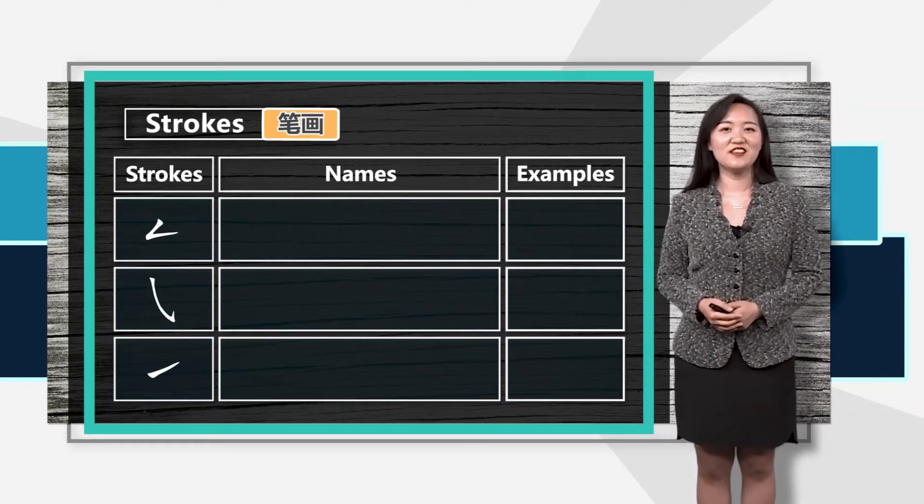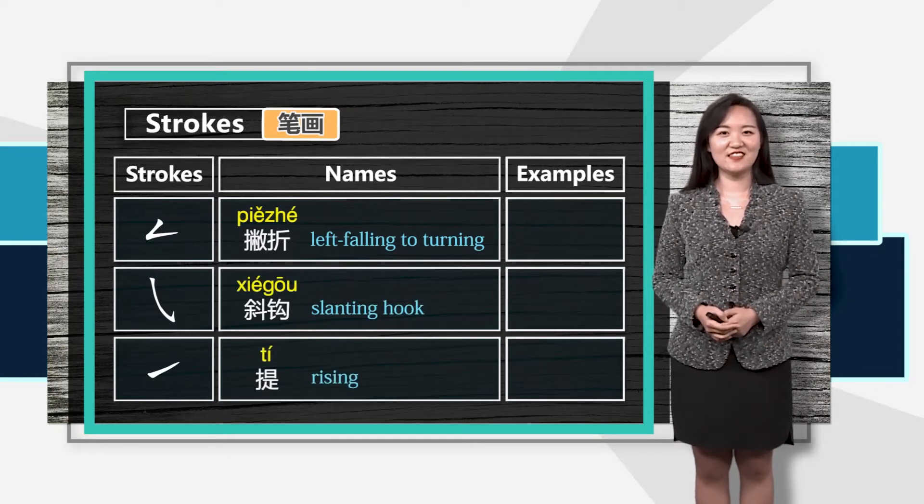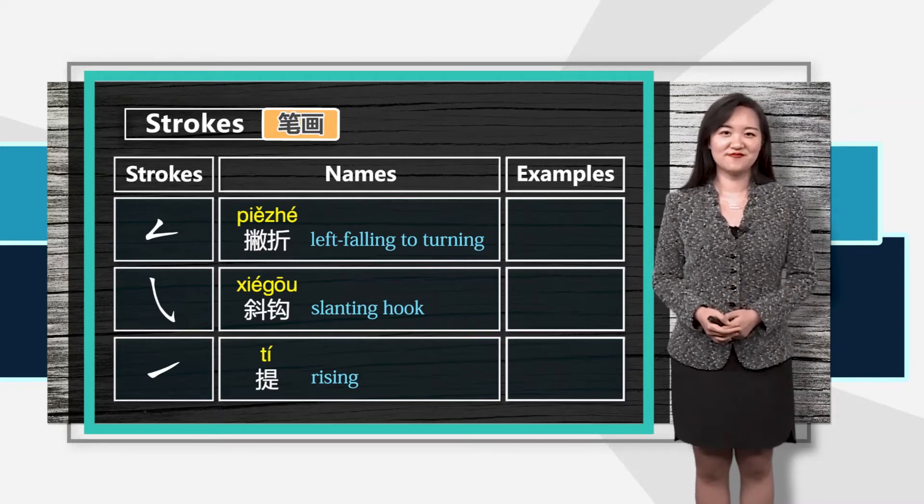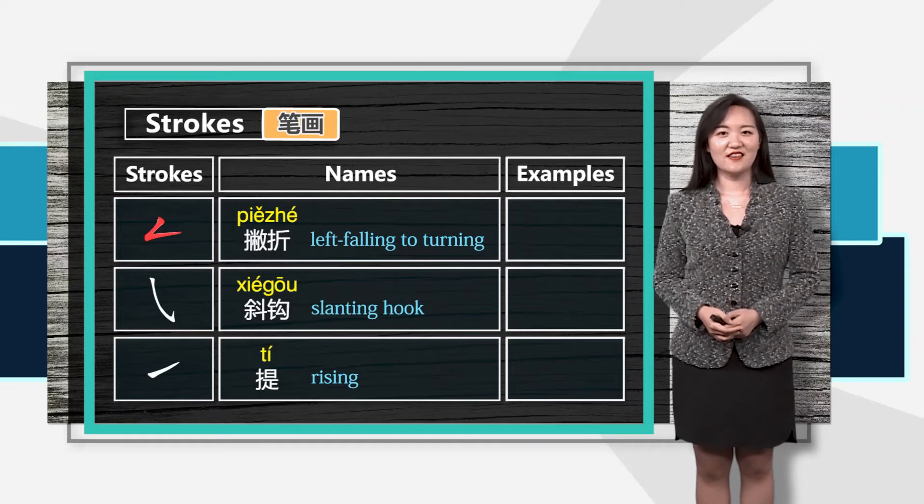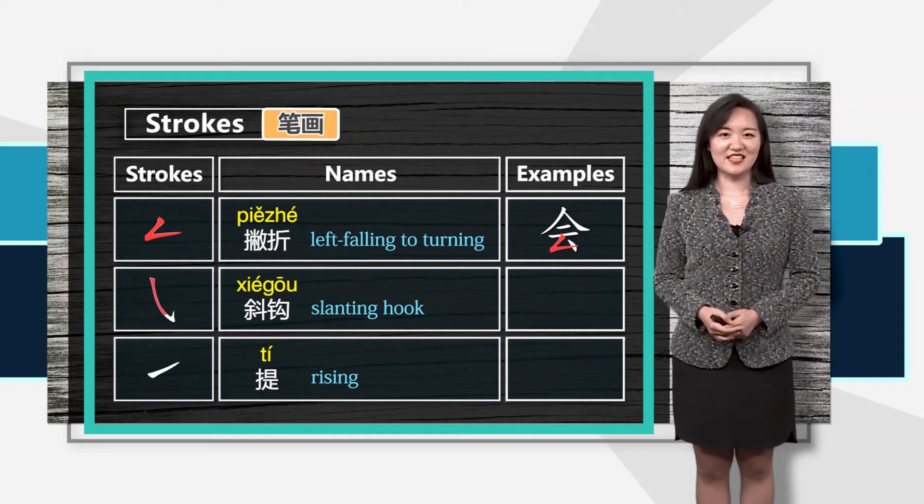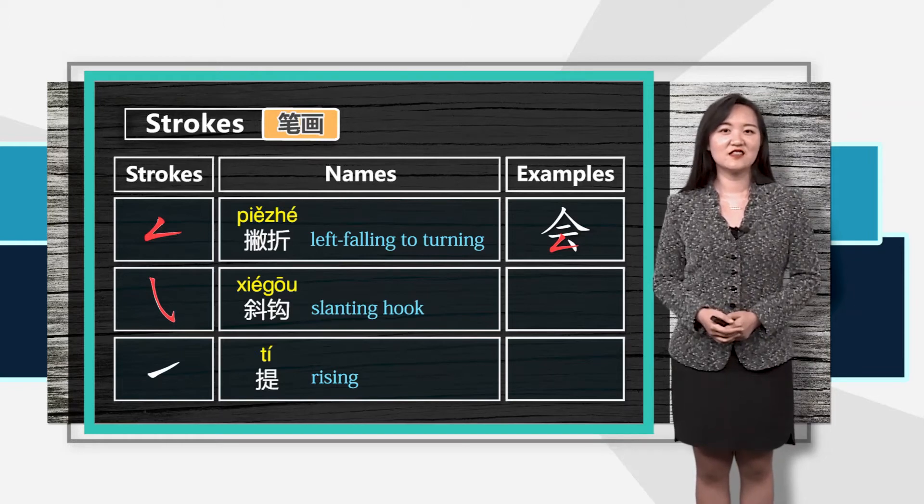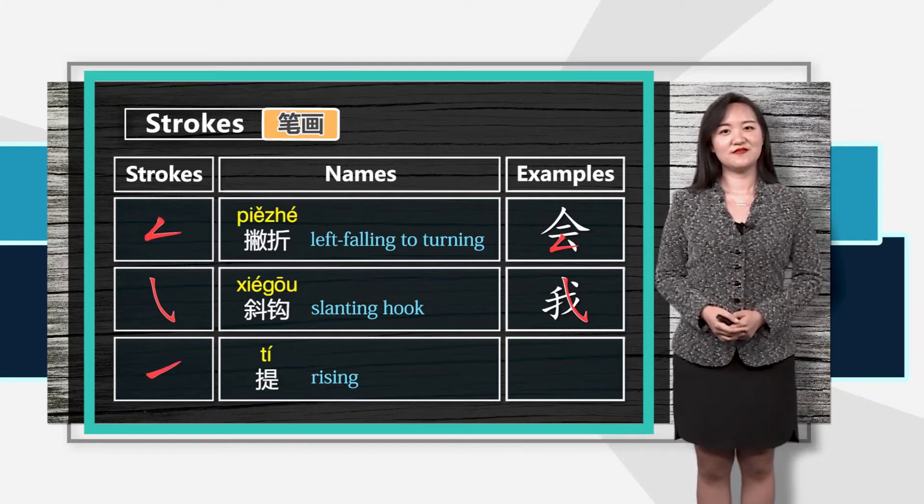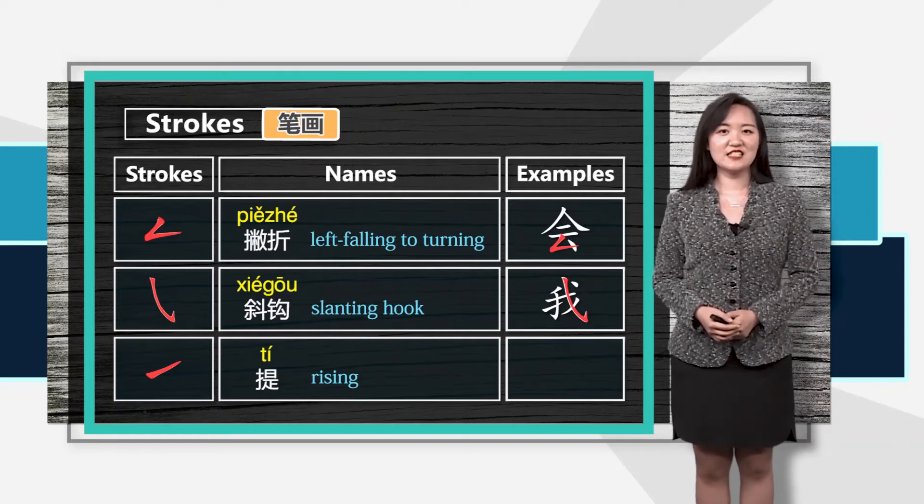Today we are going to learn three new strokes: 撇折, 斜钩, and 提. Write with me and please pay attention to the writing order. You will find 撇折 in characters like 会, 斜钩 in characters like 我, and 提 is commonly used in Chinese characters, also found in 我.